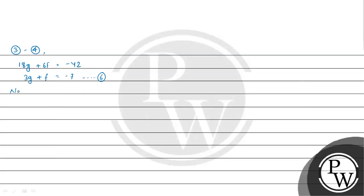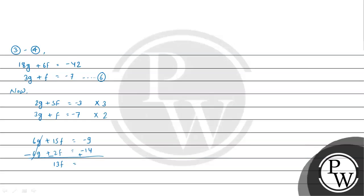So equation 5 is 2g + 5f = -3 and equation 6 is 3g + f = -7. Multiplying equation 5 by 3 gives 6g + 15f = -9, and multiplying equation 6 by 2 gives 6g + 2f = -14. Subtracting, we get 13f = 5, so f = 5/13.